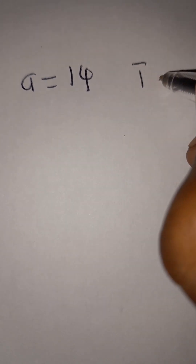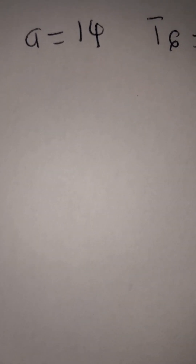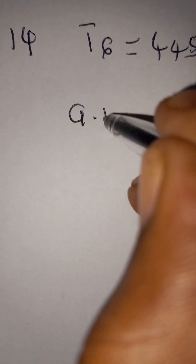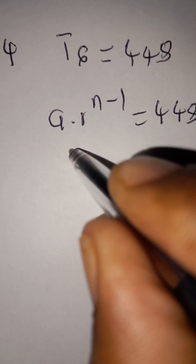At 2.1.1, the first term a is given as 14 and the sixth term is given as 448. For a geometric progression, the general term is a·r^(n−1) = 448. Our a is 14 and n is 6, so the exponent is 6−1 = 5, giving us 14·r^5 = 448.